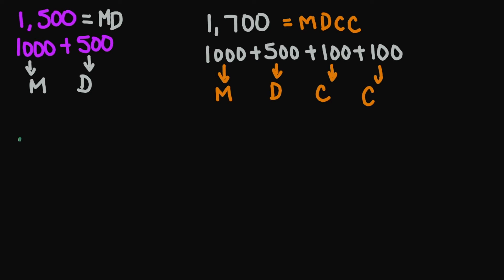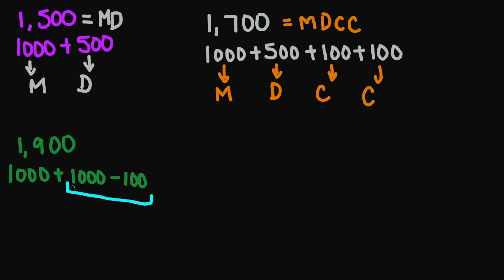Let's look at one thousand nine hundred. This is going to be broken down into one thousand plus one thousand minus one hundred. I notice I have a subtraction here, so remember anytime you have a subtraction, you need to take the opposite letter or the opposite number. We know one thousand is M and one hundred is C, but I'm not going to use MC because I'm subtracting — I will use CM. And then the one thousand here is M, so your final answer is MCM.